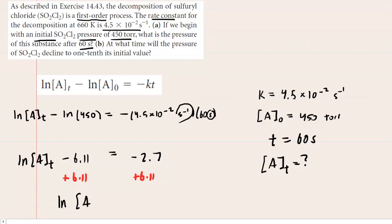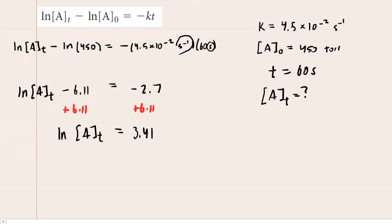And now the trickiest part, perhaps, of the algebra here is to finish solving for this A subscript t, which is the final pressure that we're looking for. And it turns out that the natural log has a base of e. And if you want to cancel out a logarithm, what you do is you raise both sides of the equation to whatever the base is.